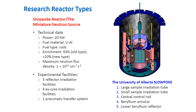The Slowpoke reactor or miniature neutron source has a power of up to 20 kW. Fuel type is uranium-aluminum rods, with enrichment of 93% for the old type and less than 20% for the new type. It contains five reflector irradiation facilities, four ex-core irradiation facilities, and one pneumatic transfer system. Many universities now have research reactors like the Slowpoke for educating new reactor scientists and for research.